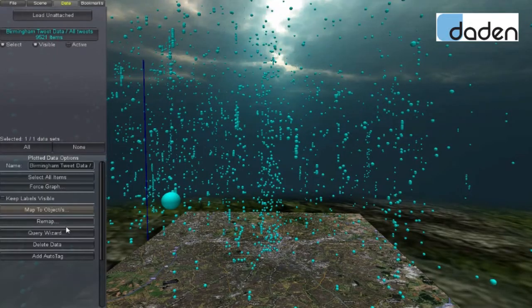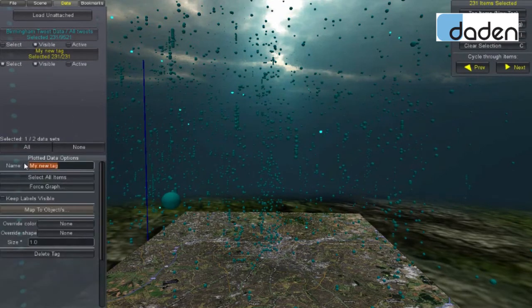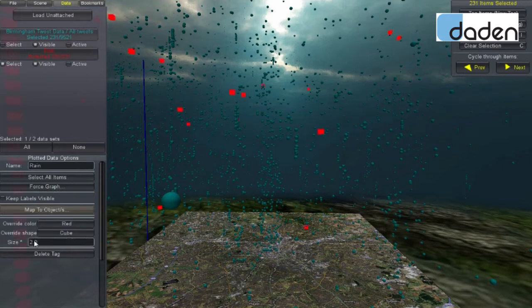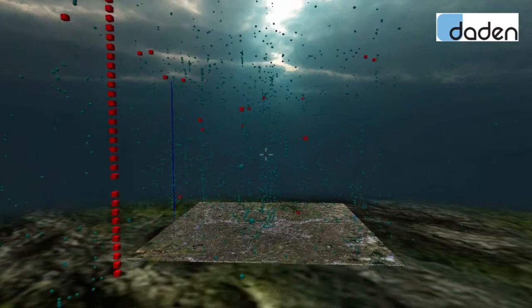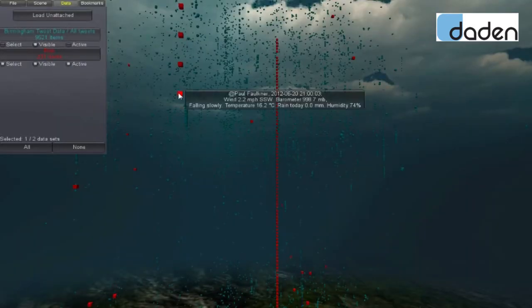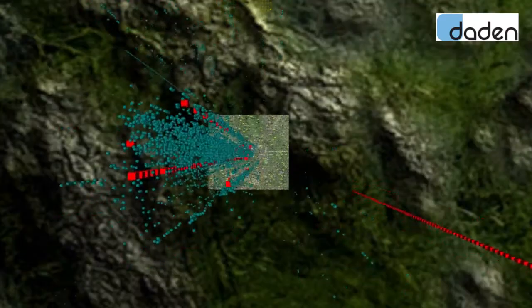Dayton Limited uses a tool called Datascape to show Twitter activity in the vicinity of Birmingham, UK. Over 10,000 geotagged tweets are captured and displayed as points above the map of the city. Recent tweets are close to the ground and age upward. We then select all tweets that mention rain and code them as red cubes.